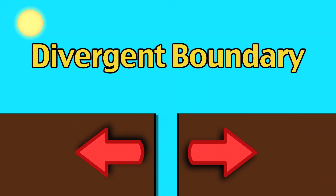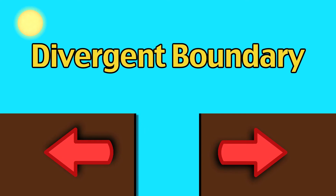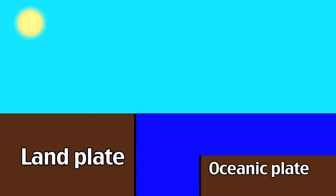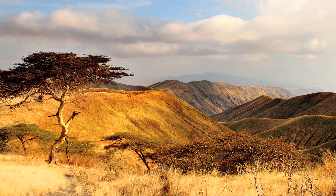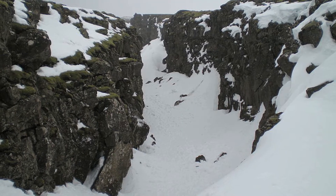When plates move away from each other, a divergent boundary is formed. When this happens, either a rift or an ocean ridge will form. A rift occurs when two landmasses are on the divergent boundary, and an oceanic ridge is formed when the oceanic plate is on the boundary. An example of a rift is the Great Rift Valley in Africa, and an example of a ridge is the Mid-Atlantic Ridge.